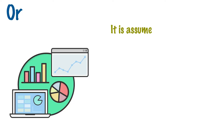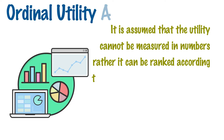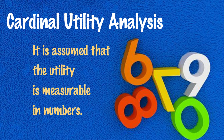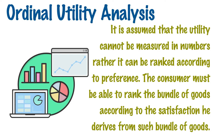Now let's move on to ordinal utility analysis. We have seen that under the cardinal utility analysis, it is assumed that the utility is measurable in numbers. However, in real life, we never express utility in the form of numbers. The ordinal utility approach believes that utility cannot be measured in numbers; rather it can be ranked according to preference. The consumer must be able to rank the bundle of goods according to the satisfaction he derives from each bundle of goods.